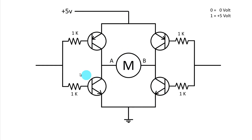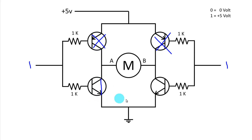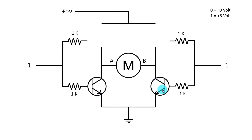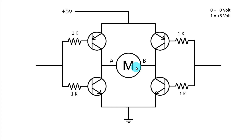Now see what will happen if we provide 1,1. If we provide 1, the PNP transistor will work as an open circuit and the NPN transistor will work as a closed circuit on both sides. The positive supply is disconnected from the motor, so at this time also no current will flow through the motor. This is how we make an H-bridge circuit using transistors.